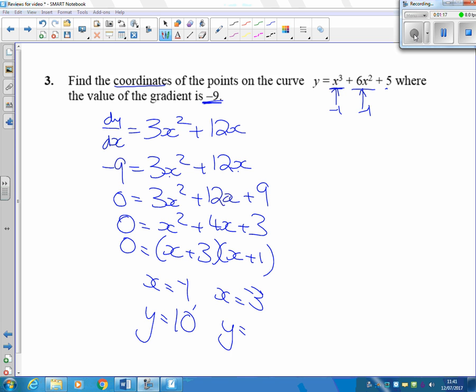And also putting the minus 3 in here and the minus 3 in there. So that's what, minus 27, that's 32, isn't it? So you've got two points, two points where the gradient is equal to minus 9.